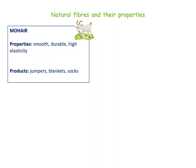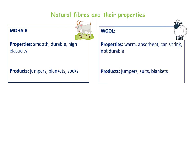Mohair is similar to wool — it is smooth, durable and has high elasticity, generally because it is constructed using knitting. It is also very warm, making it superb for things like jumpers, blankets and socks. Wool is also warm and absorbent, but the negatives are that it can shrink and it is not as durable. It makes similar products to mohair: jumpers and blankets.